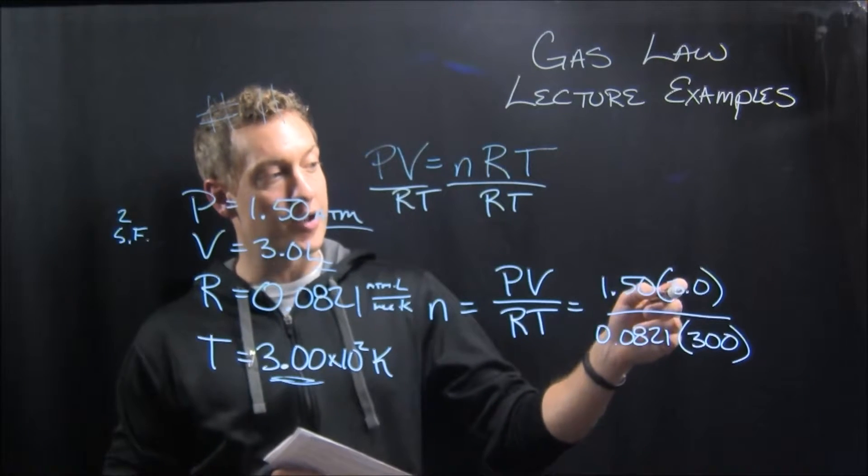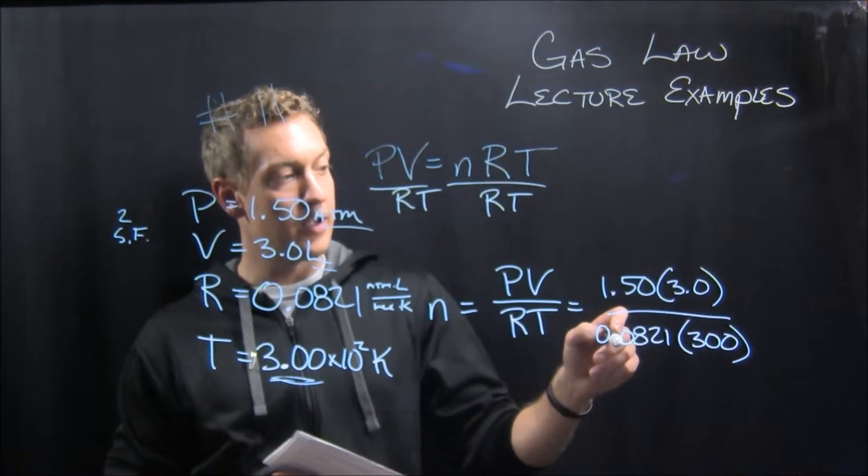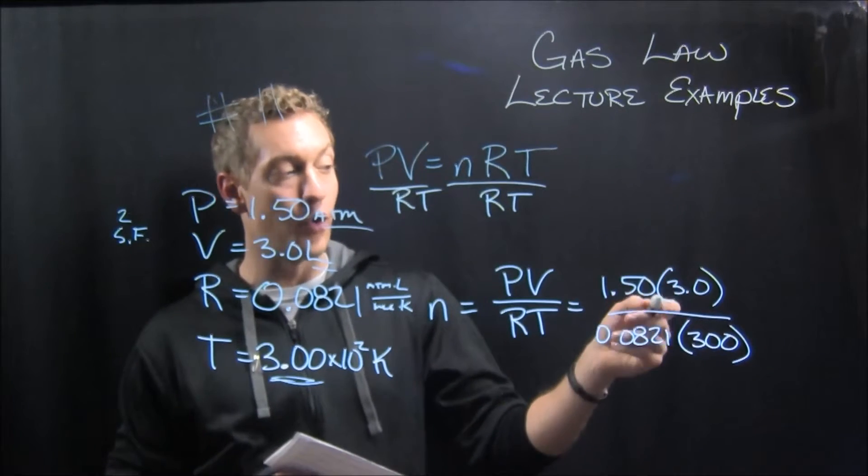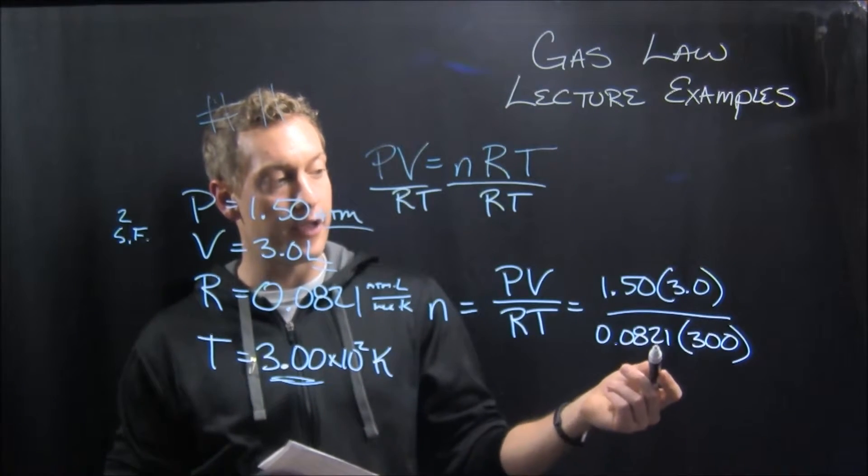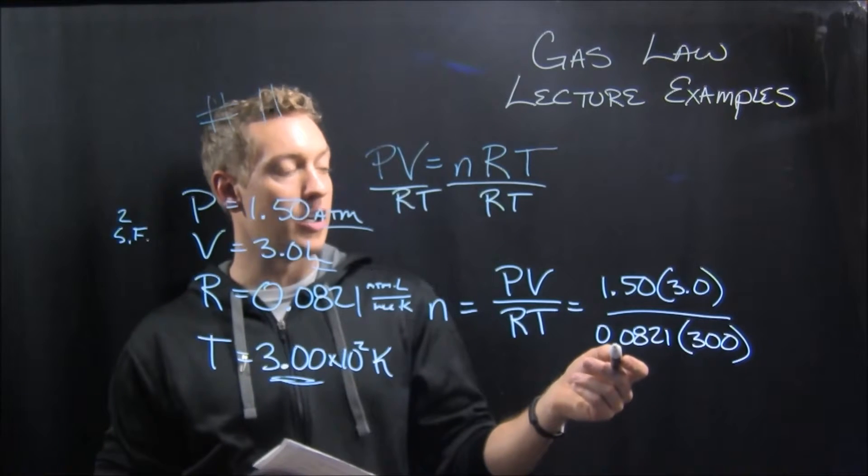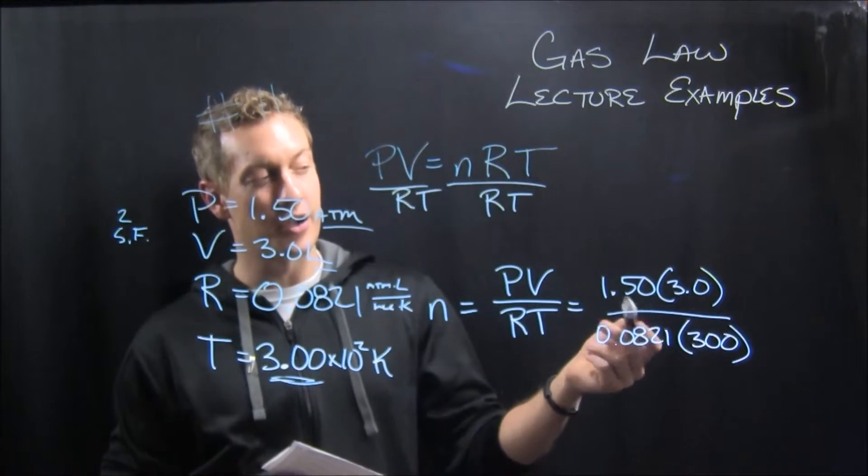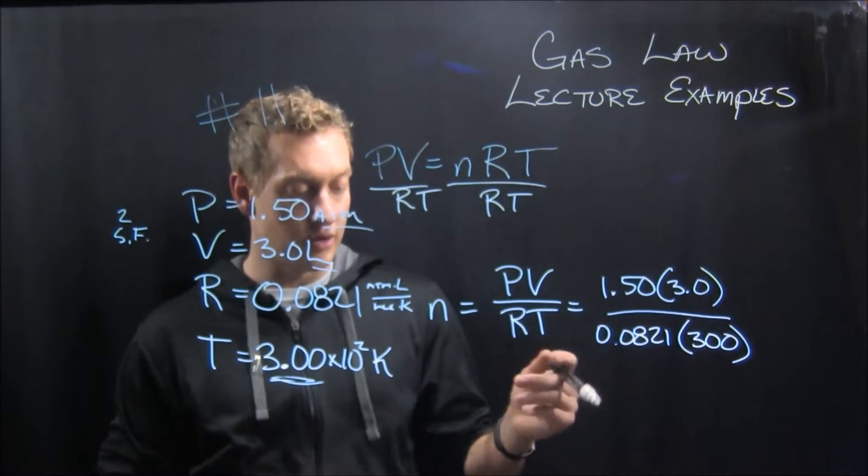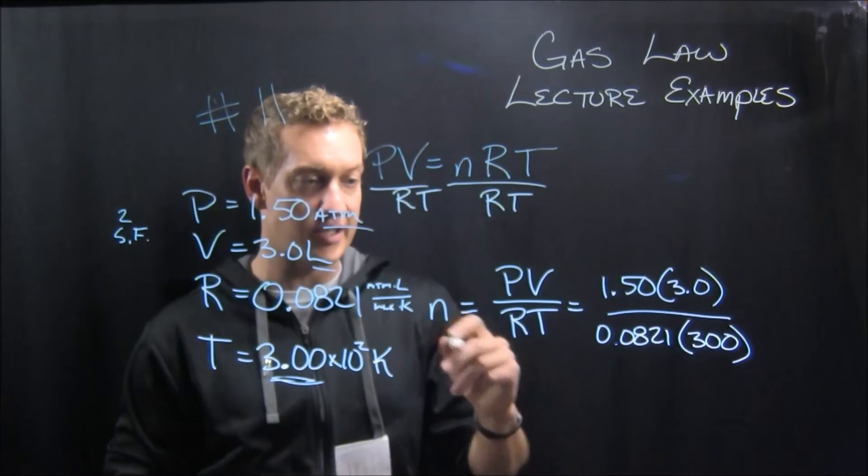1.5 times 3 is 4.5. That's about a tenth, so it's going to be about 4.5 divided by about 30, or a little less than 30. So let's call it 5 divided by 30, so that's a sixth. So we're looking at about a sixth of a mole.